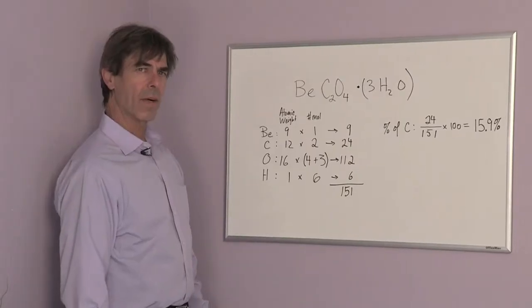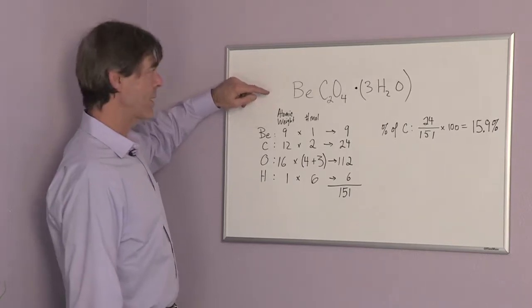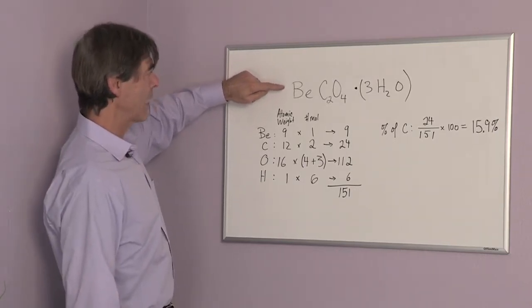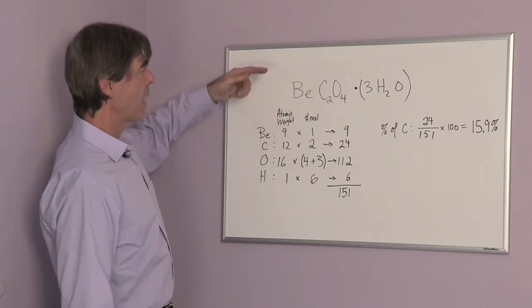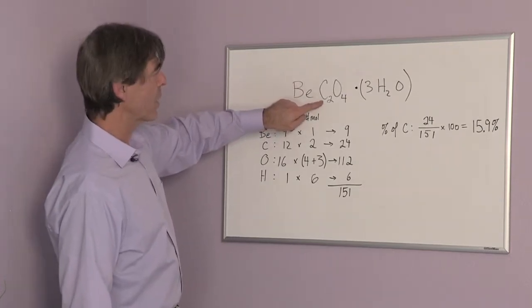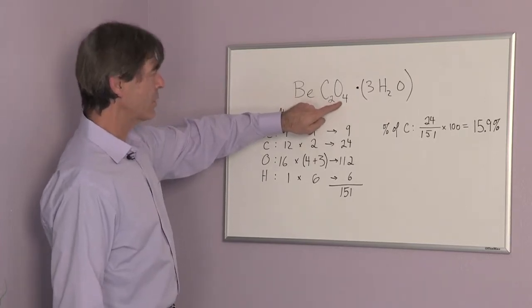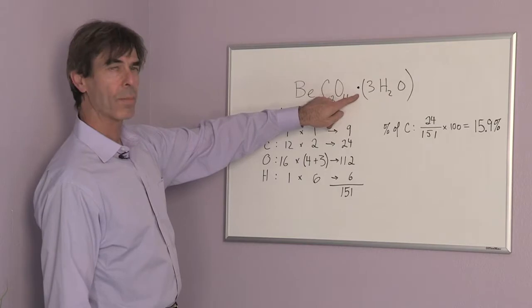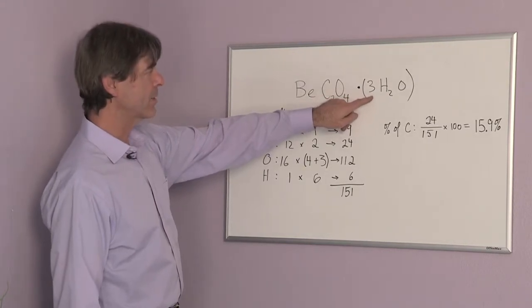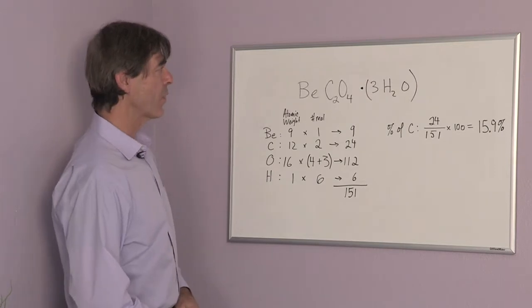I'm going to consider a specific example. We need the chemical formula before we can calculate the mass percentage of carbon, and I'm going to consider a hydrated form of beryllium with two carbon atoms and four oxygen atoms, and the hydrated form in this instance has three H2O molecules. That's the formula for water.